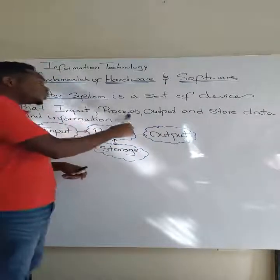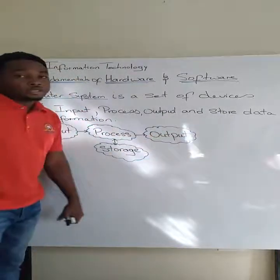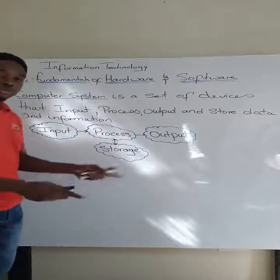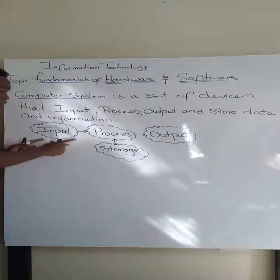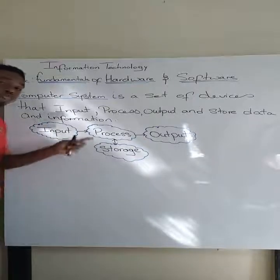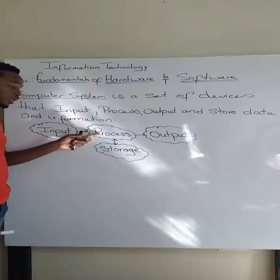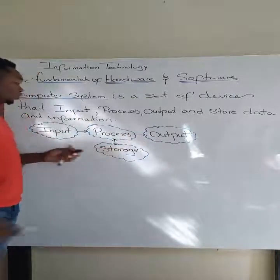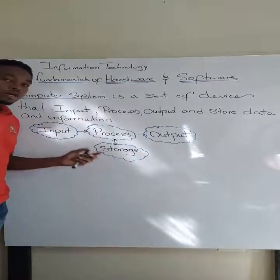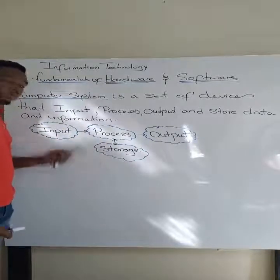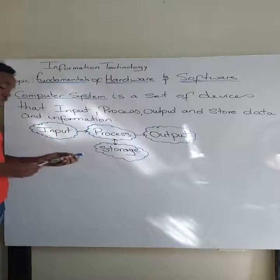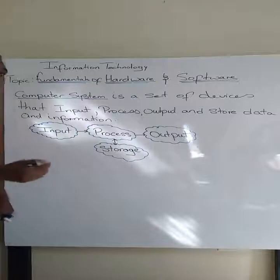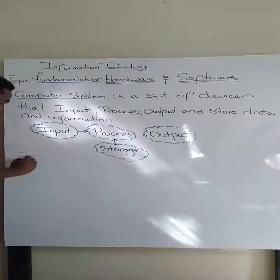In essence, a computer system must carry these four basic or major functions: input, process, output, and store data. Here we have a simple diagram — from input it must go to process, from process it can go to storage or straight to output.